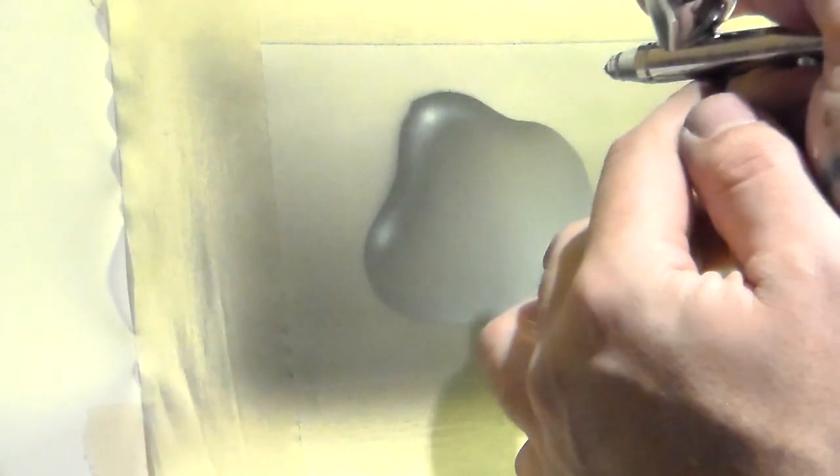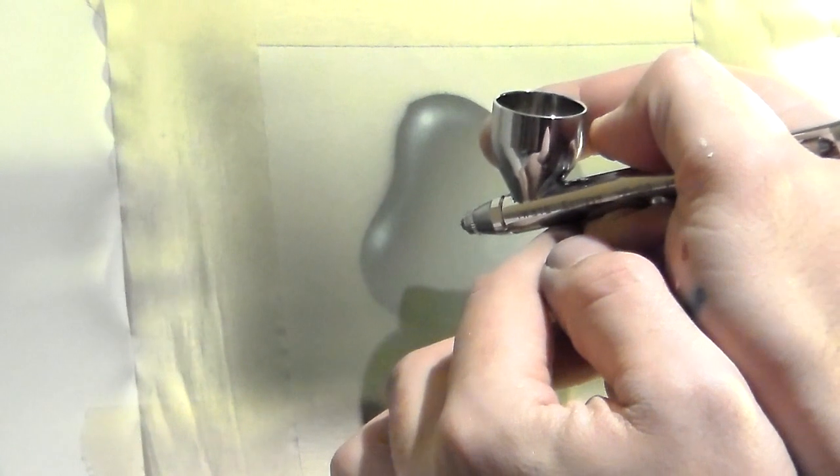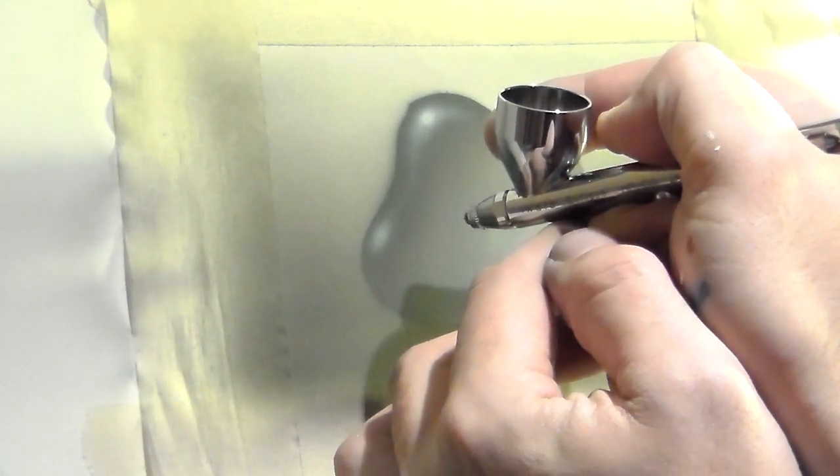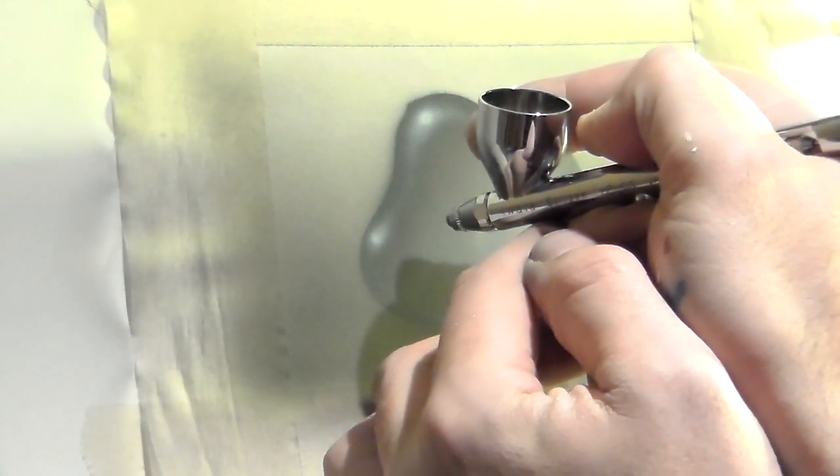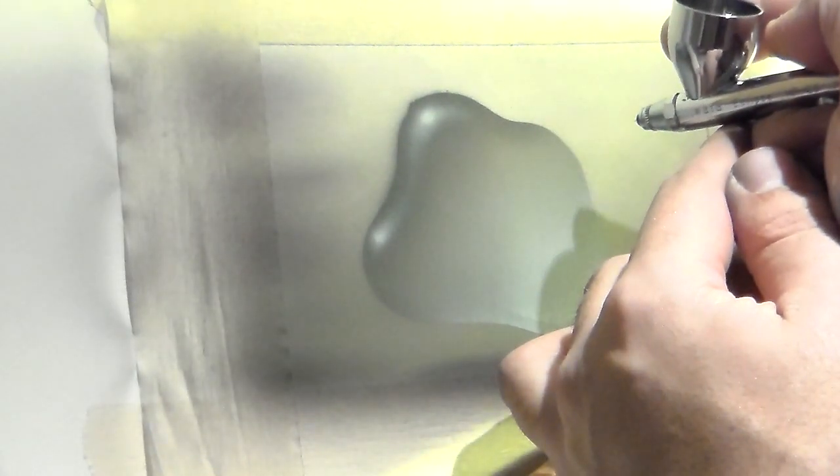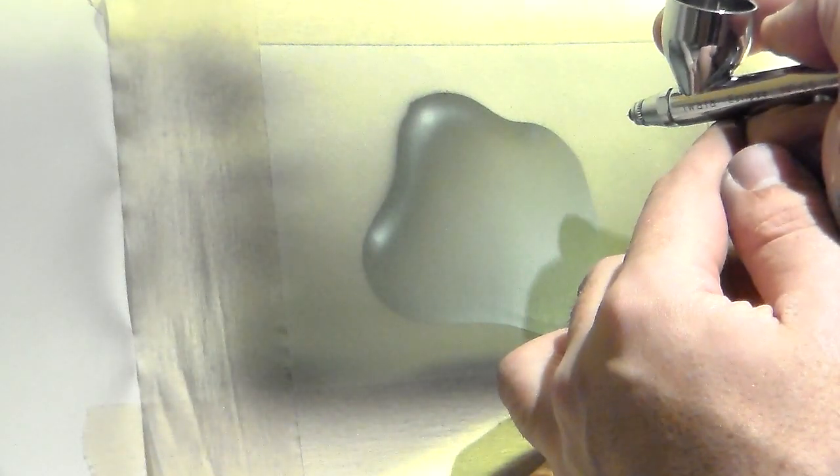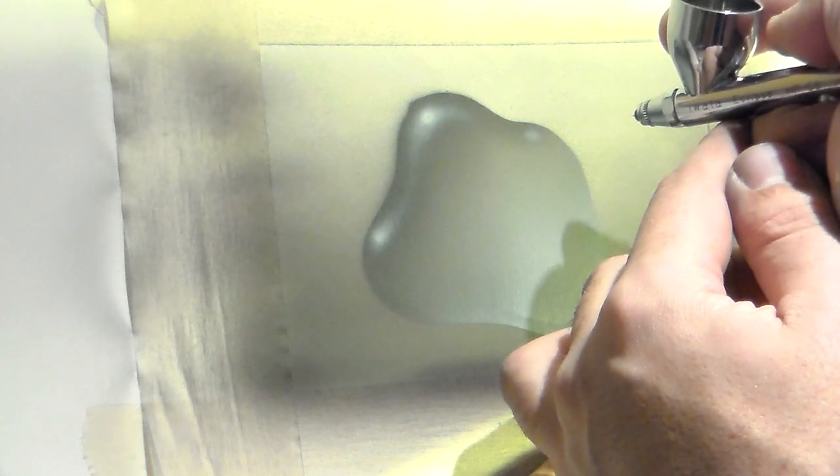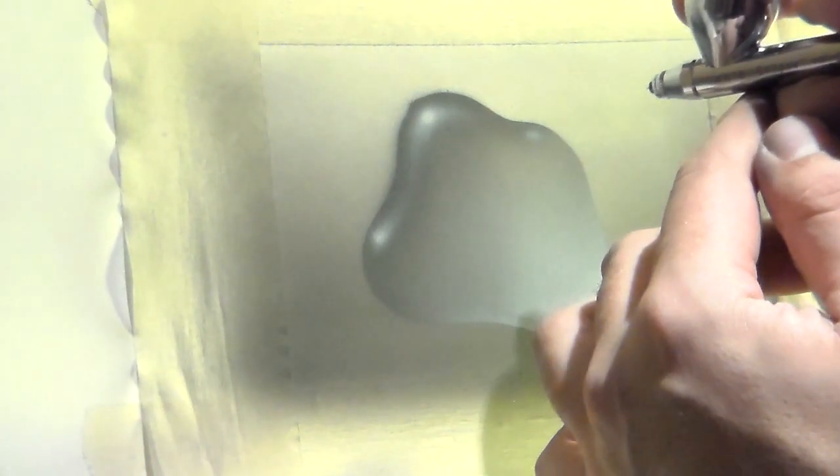As this water drop has curvy shapes, light is going to hit in more places than just, for example, the first one where I was putting the highlights. For instance, in that part, light would reflect just a bit. That's why I didn't insist that much in there.